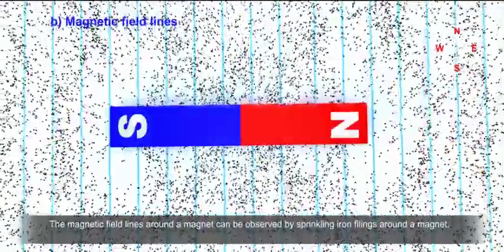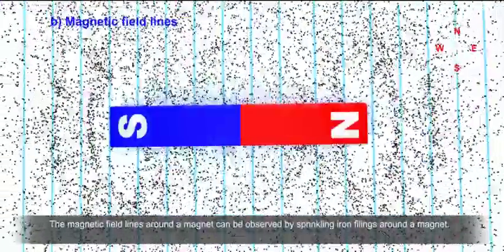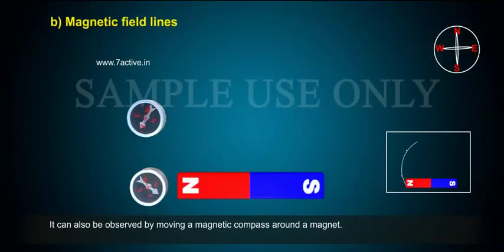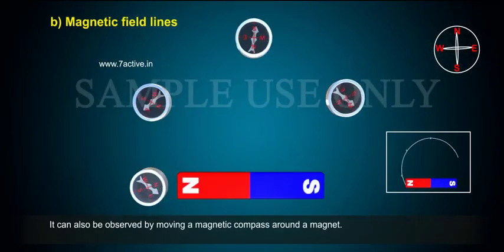The magnetic field lines around a magnet can be observed by sprinkling iron filings around a magnet. It can also be observed by moving a magnetic compass around a magnet.